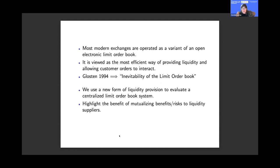I'm going to think through this particular exchange always in relation to the fundamental unit we think about: the electronic limit order book. Larry G wrote a great paper about the inevitability of the limit order book — the idea being that the marginal participant essentially made zero profits due to price and time priority, making the open electronic limit order book immune to competition. Most securities and derivatives are traded on some version of an open electronic limit order market, so it's a very robust organizational form.